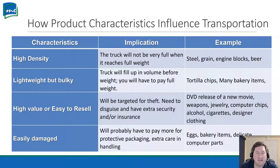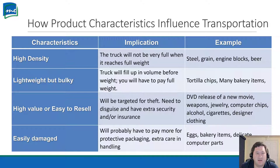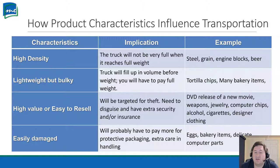Then we have high value or easy to resell items — these are big targets for theft. Do we need to disguise the truck, have extra security, or insurance? For example, it could be on a truck with no markings on the outside — no company name, no advertisement — just a white truck rolling down the road. Sometimes there's a security car right behind it. You can also pay for additional insurance. Examples include new movie DVDs, weapons, jewelry, computer chips, alcohol, cigarettes, and designer clothing.